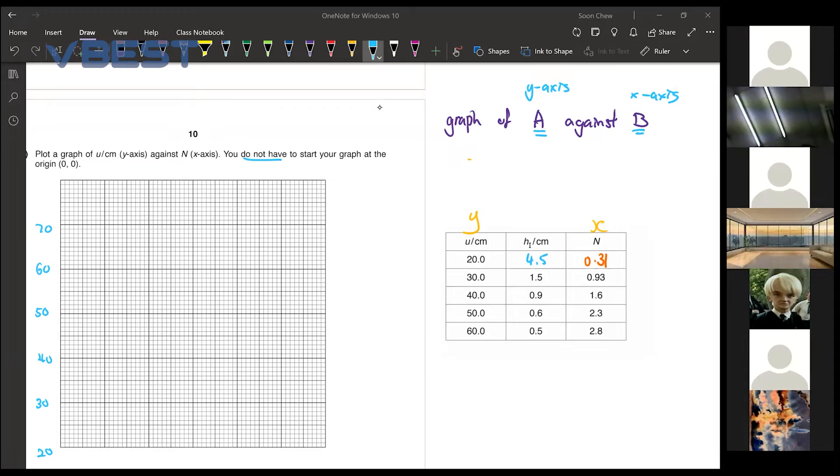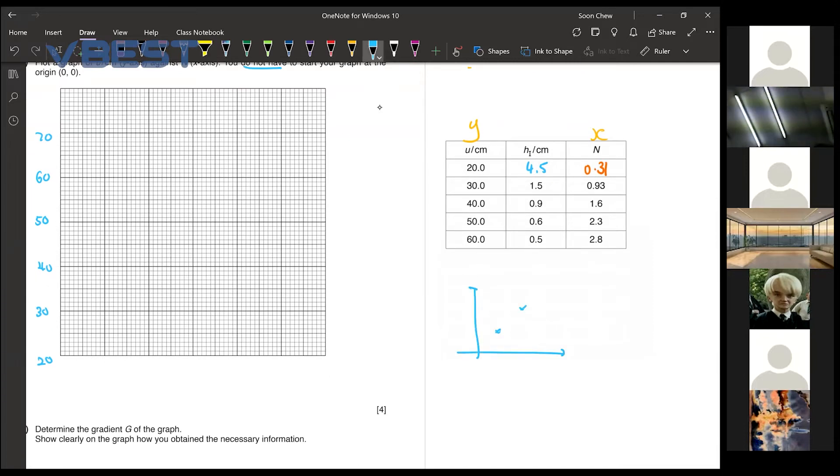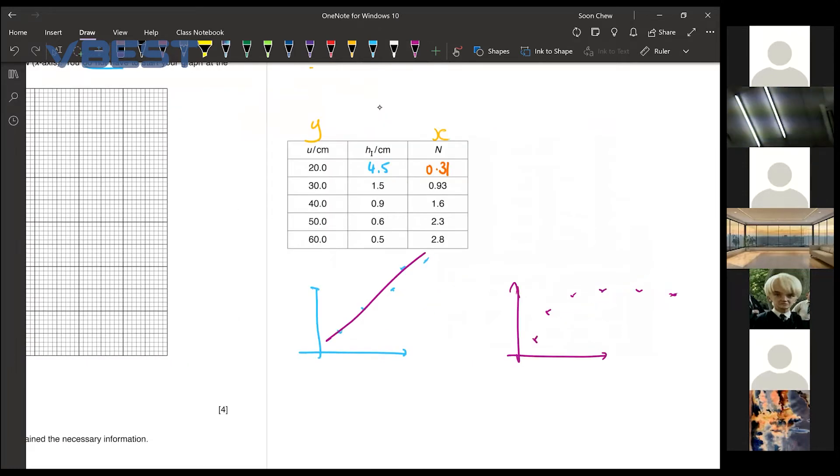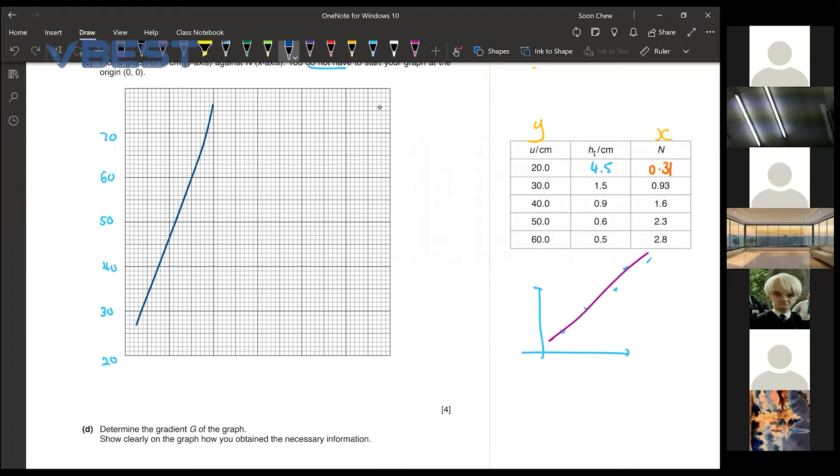If the question did not specify, do we draw the line of best fit? You need to see the trend. If the point that you get is a very clear straight line, then yes, you need to draw a line of best fit. But when you notice that your graph is having a very clear curve, then you cannot just draw a line of best fit. It doesn't make sense. You need to draw a curve for the best fit too. But when you guys are drawing your graph, you need to make sure to fill at least two-thirds of the graph.